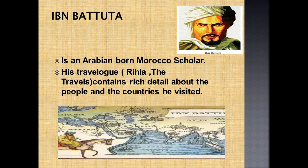Ibn Battuta, an explorer from Morocco, visited India during the rule of Mohammed bin Tughluq, who was considered to be the richest man alive during that time. Ibn Battuta spent considerable time in the court of the Sultan and was even made a qazi in the Sultan's court. He was later appointed as an envoy to China, accompanying a few Buddhist monks.